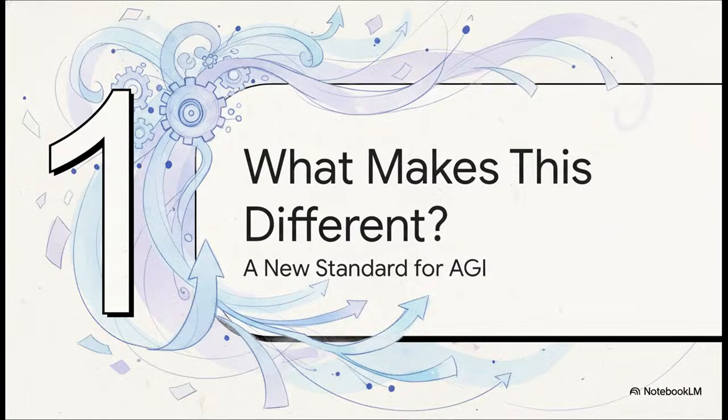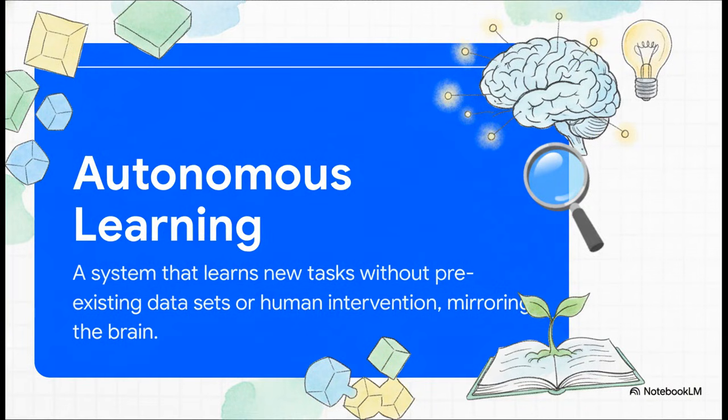Now, I know what you're probably thinking. AGI, again? We hear these world-first claims all the time. And you're right to be skeptical. But this one feels different. Integral AI didn't just shout from the rooftops. They actually laid out a clear, new standard for what AGI even means. The core idea here, the absolute game-changer, is something called autonomous learning.